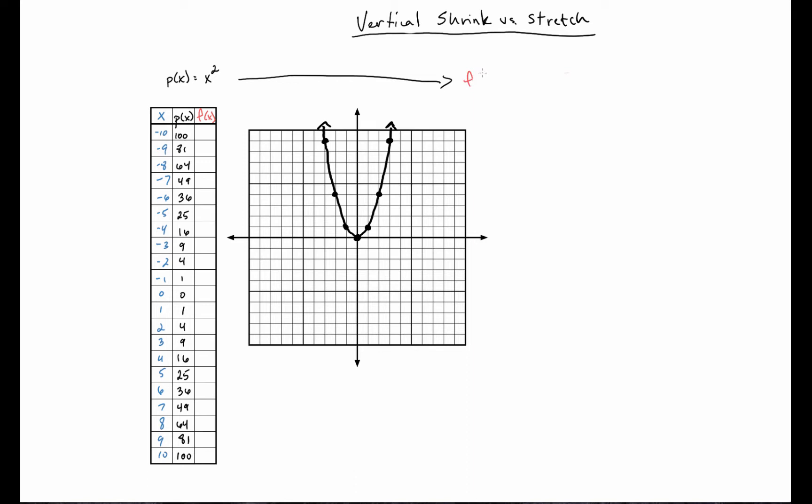So maybe we have f of x is equal to 2 times x squared. So only the x is being squared. So I do know that this is a vertical transformation. It happens after the square function.